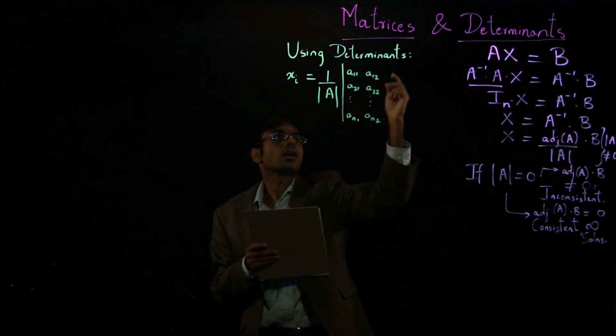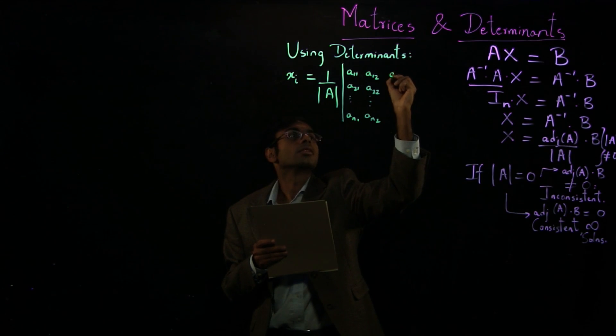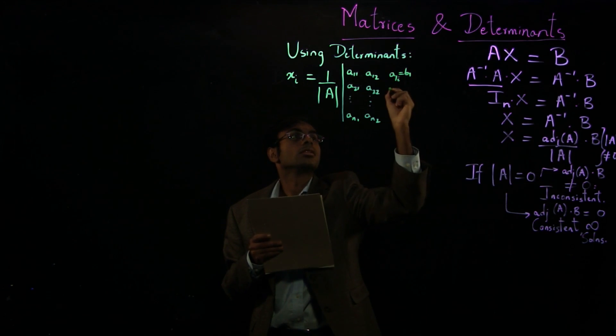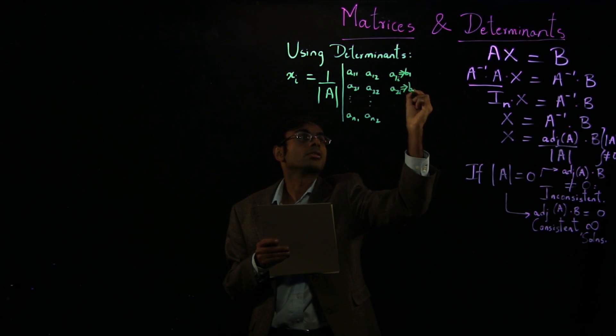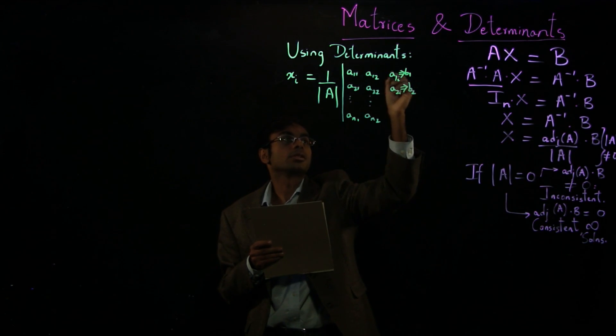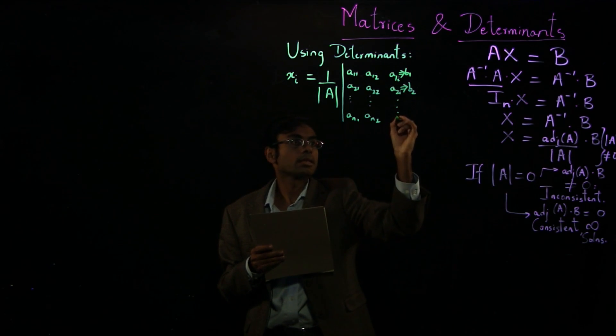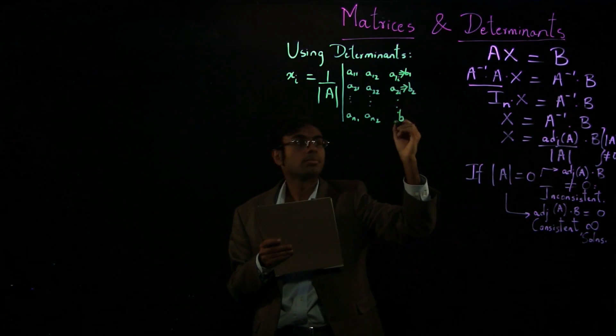Find the ith column of the determinant. So a1i, replace it by b1. A2i, replace it by b2. So this is a substitution operation. You don't keep the original term a1i, a2i, and so on. Keep replacing this by the elements of the right-hand side, bn.